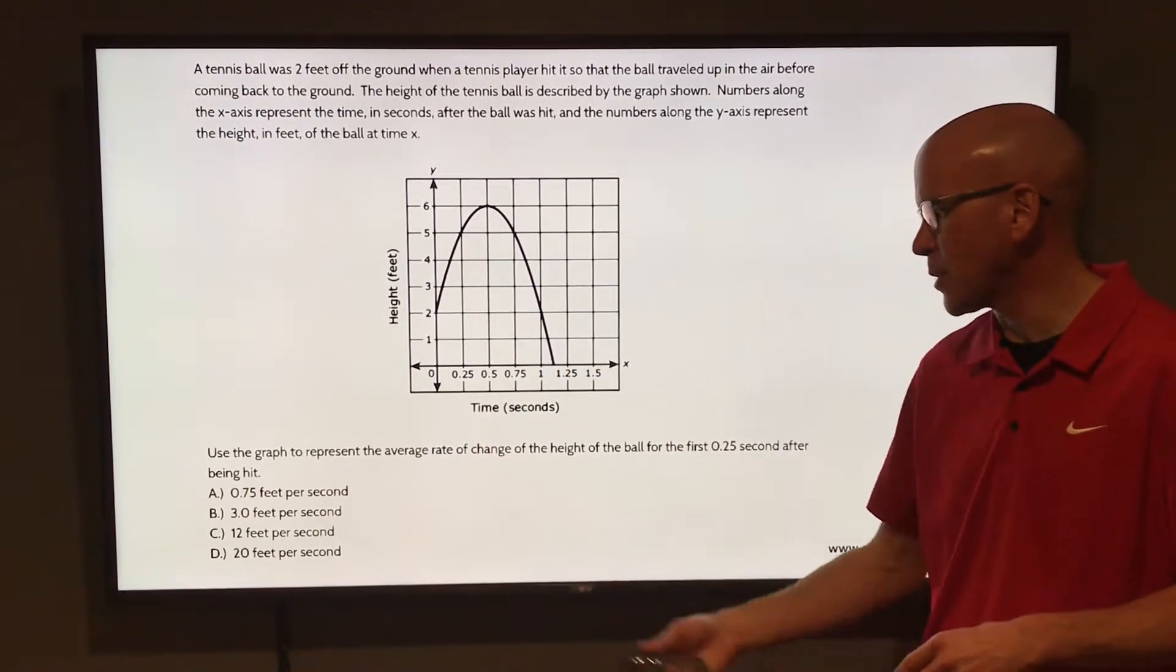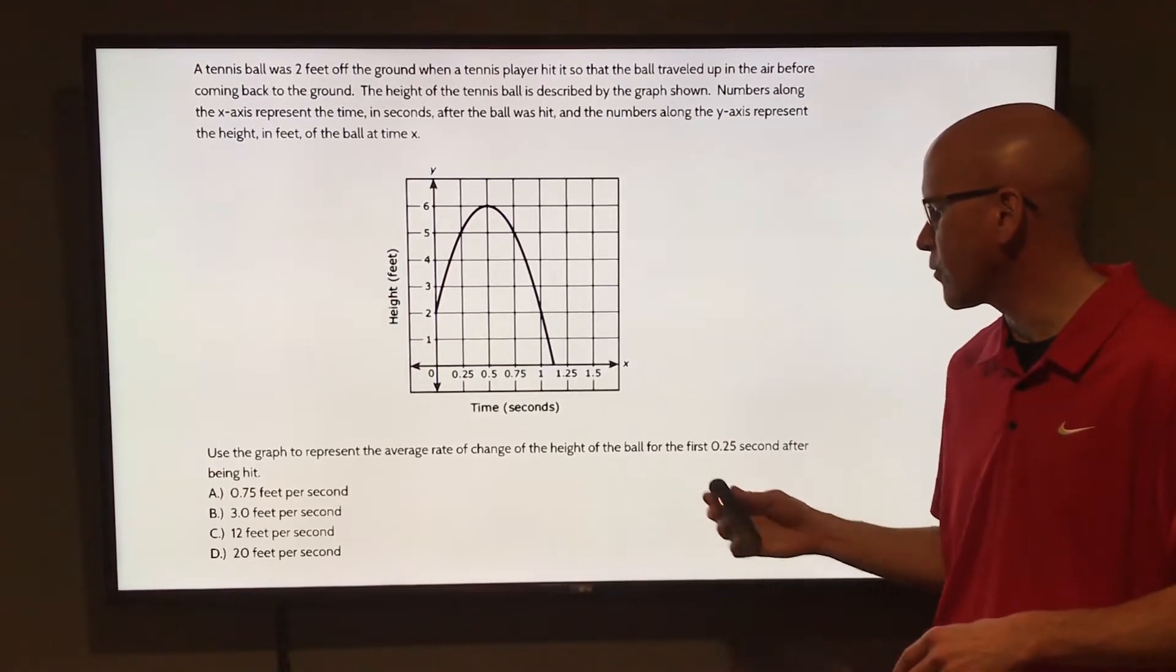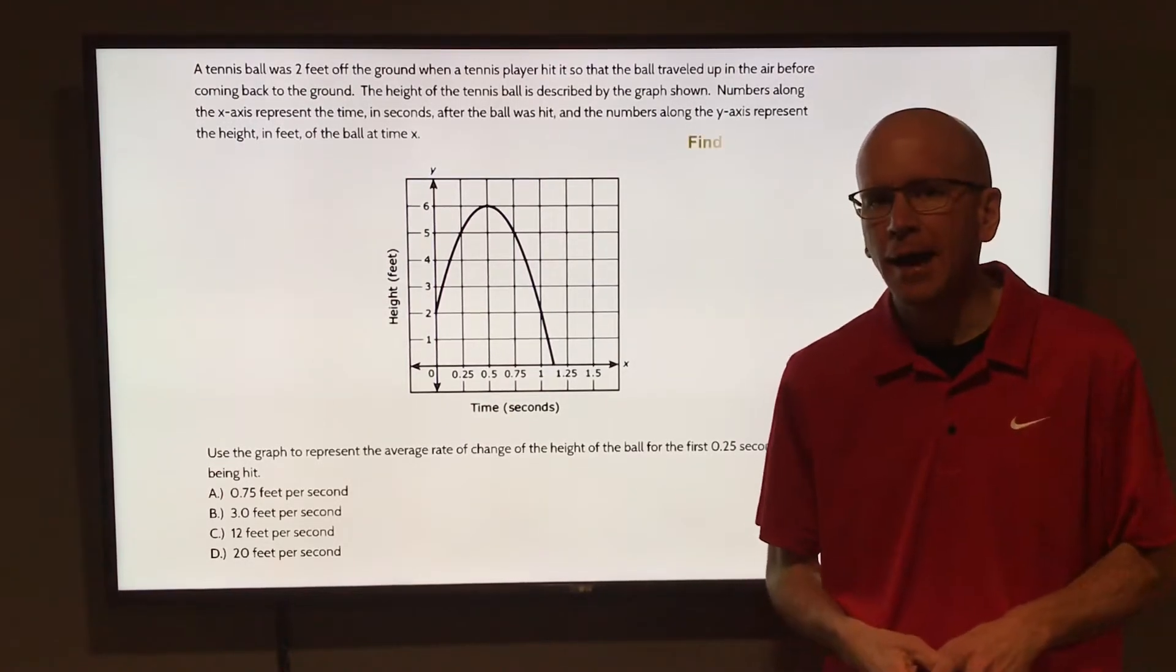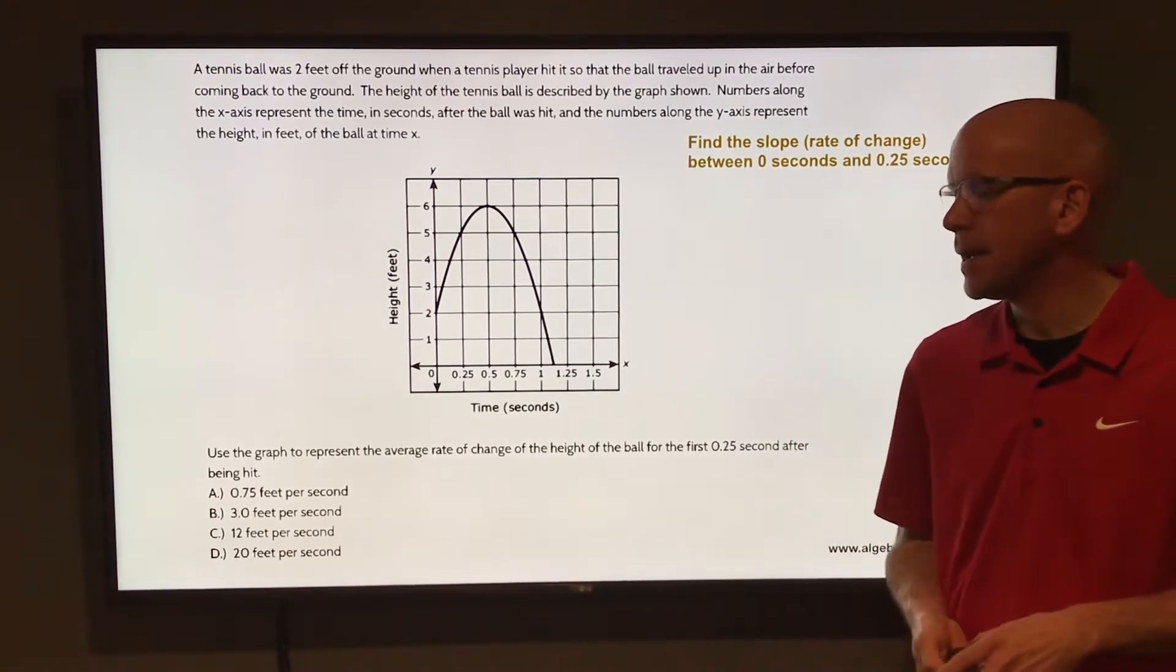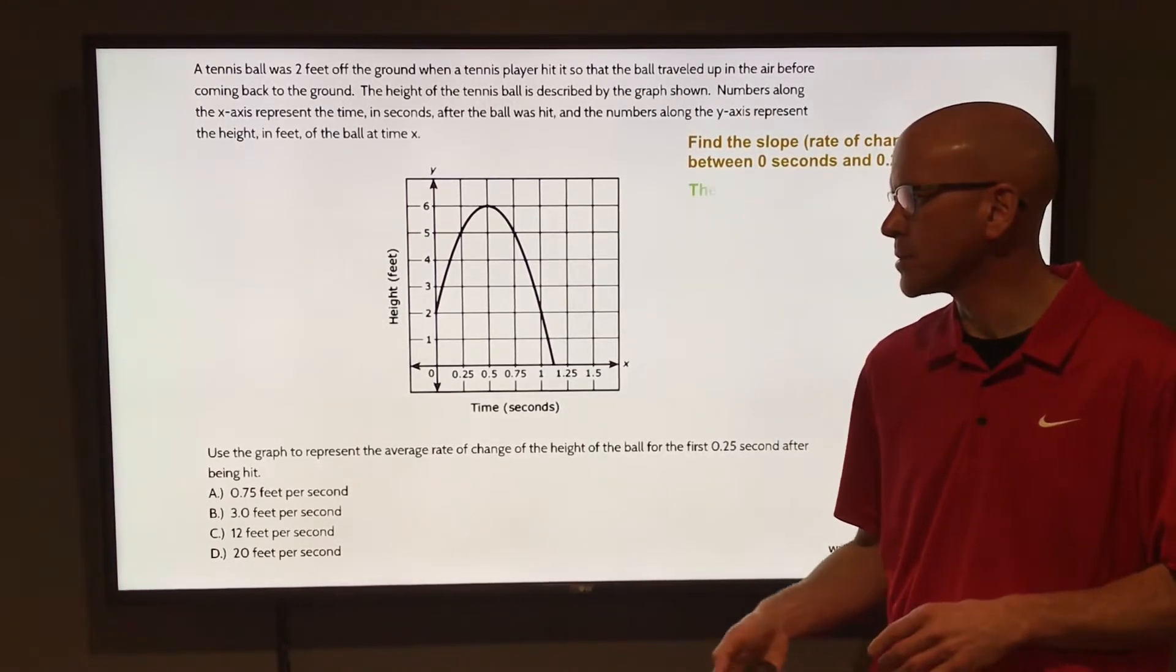Use the graph to represent the average rate of change of the height of the ball for the first 0.25 seconds after being hit. So we're going to find the slope, that is the rate of change between 0 seconds and 0.25 seconds. There are two points we're going to use.